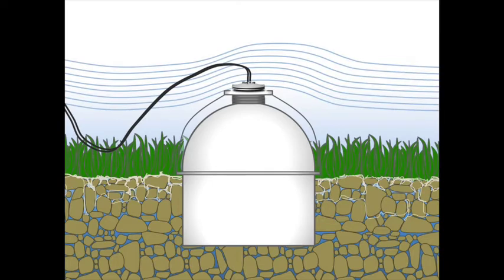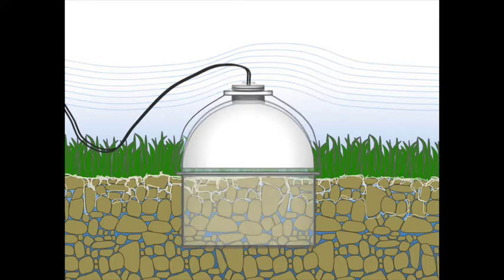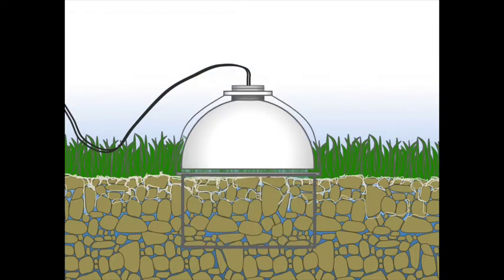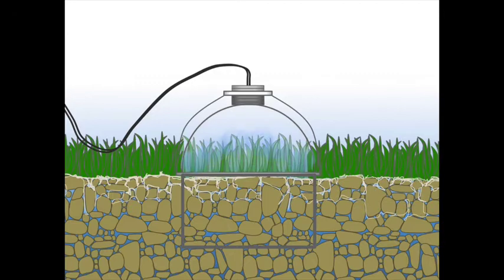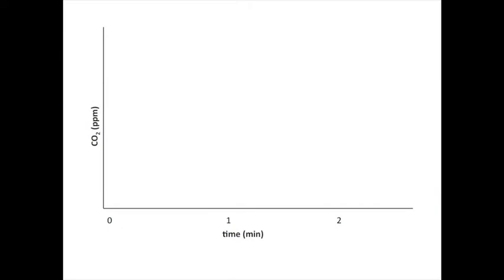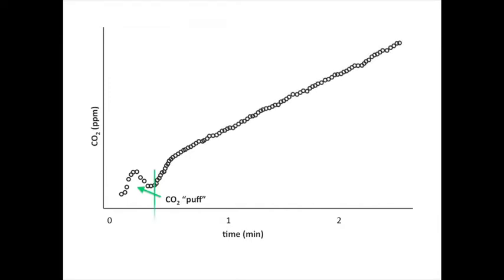The closing of the chamber at the beginning of the measurement can also cause pressure changes. When the chamber comes down, it usually causes a puff of CO2 to leave the soil. Since the measurement begins as soon as the chamber closes, we must adjust our estimate of CO2 efflux, making sure we account for the initial disturbance caused by the chamber closing. We call this the dead band, and it is usually set to 20 seconds. When we calculate our CO2 efflux rate, we use the data from the end of the dead band to the end of our measurement period.